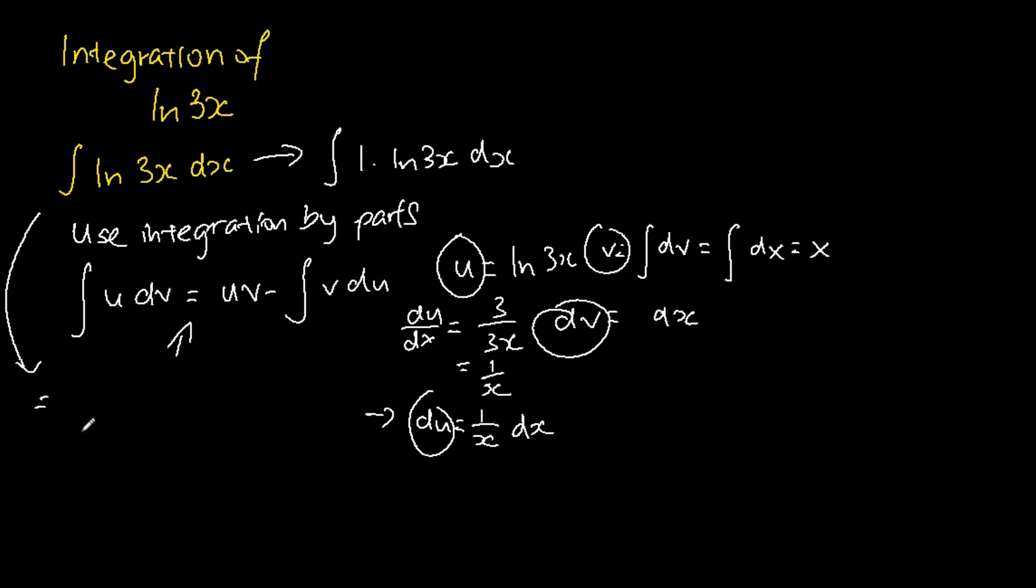So the integral of ln 3x dx is equal to u, which is ln 3x, times v, which is x, subtracting away the integral of v, which is x, times du, which is 1 over x dx.